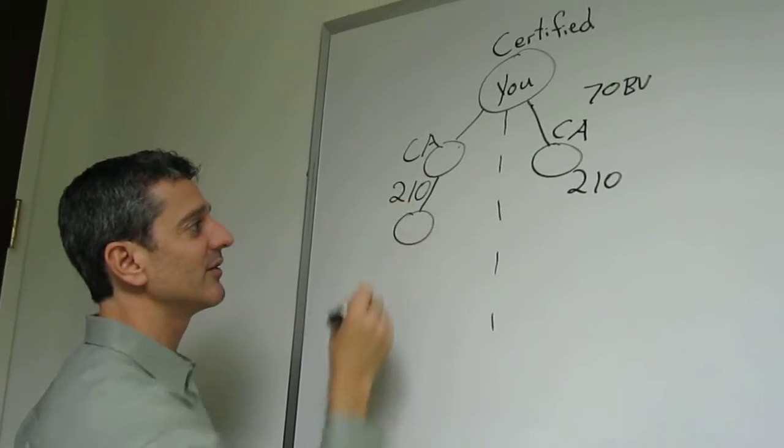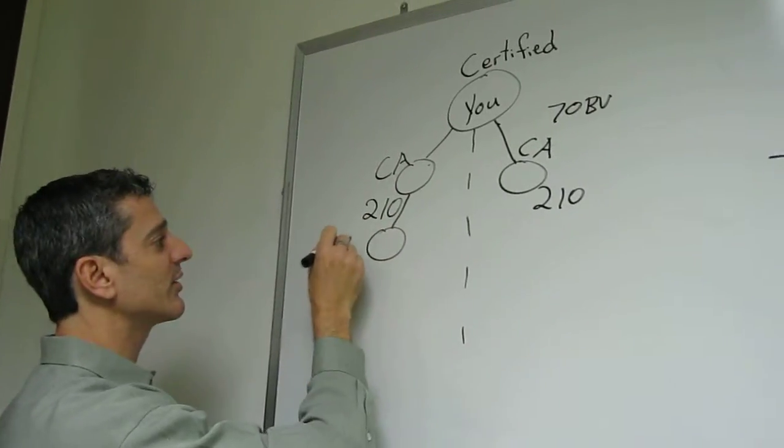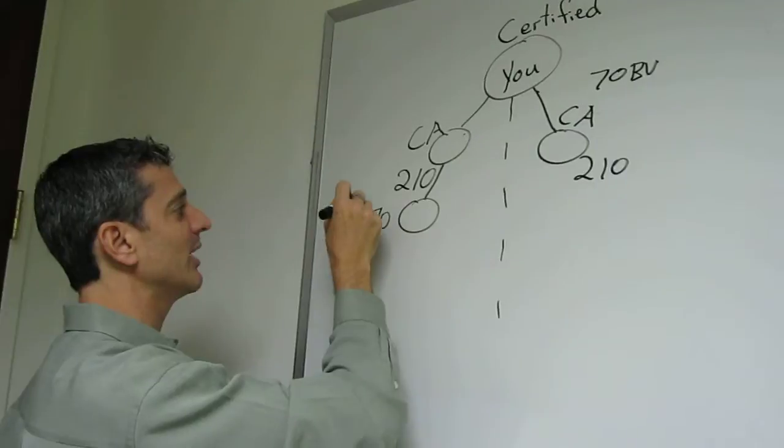Now, if the third one comes in as a certified affiliate, they're worth 70 BV points anyway. Here's what's interesting.